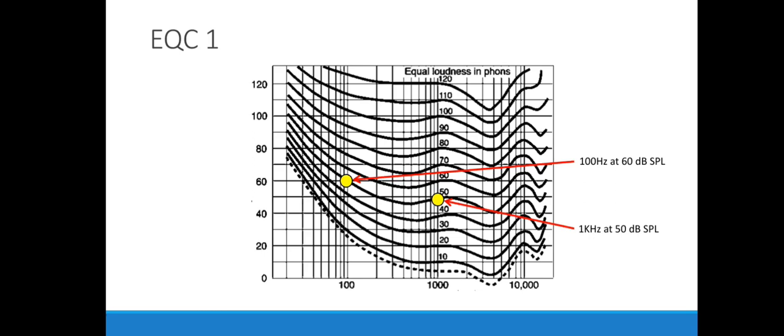In the second example, 1 kHz is played at 50 dB SPL and 4 kHz at 40 dB SPL. Here 4 kHz wins — our ears favor 4 kHz relative to 1 kHz. So despite 4 kHz being 10 dB lower in SPL than 1 kHz, we still end up hearing them at the same loudness level.